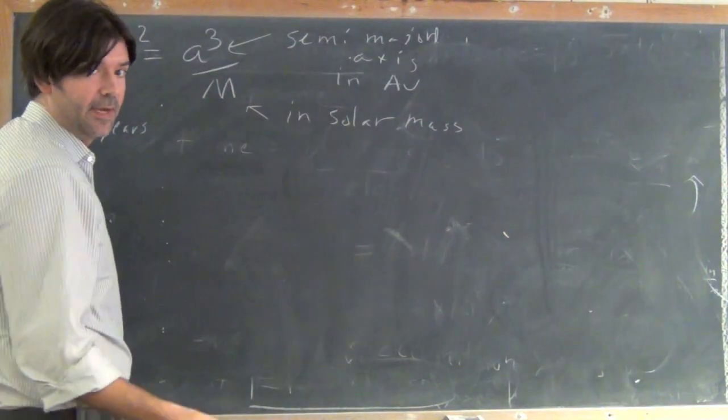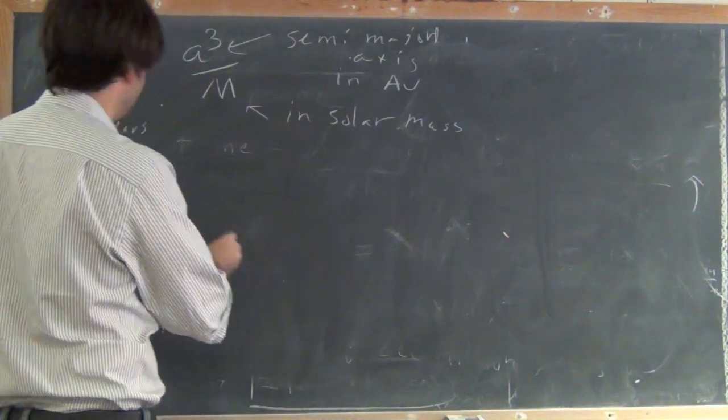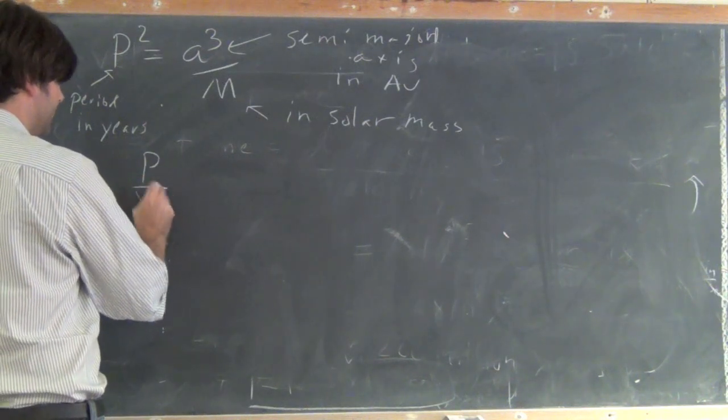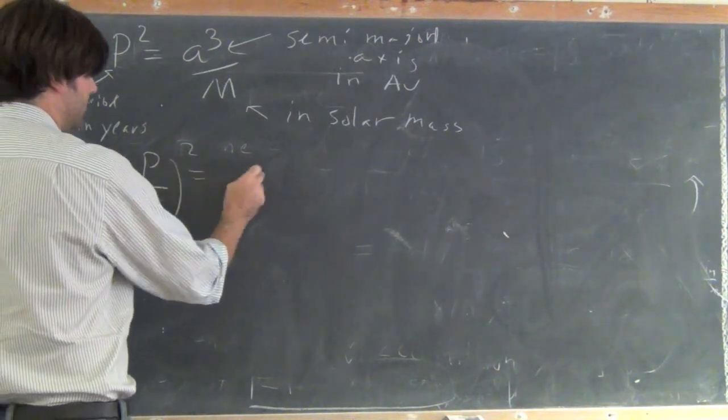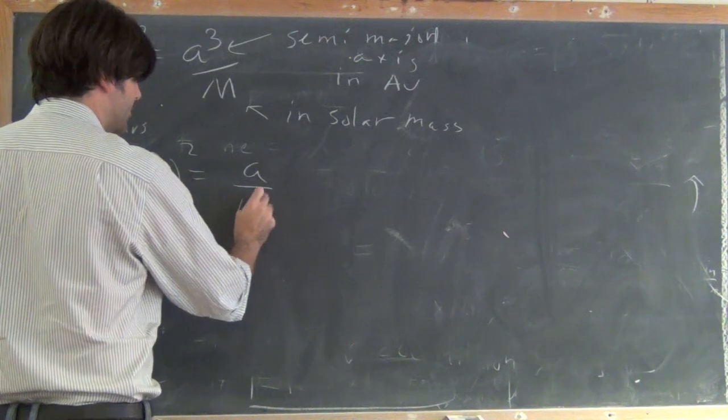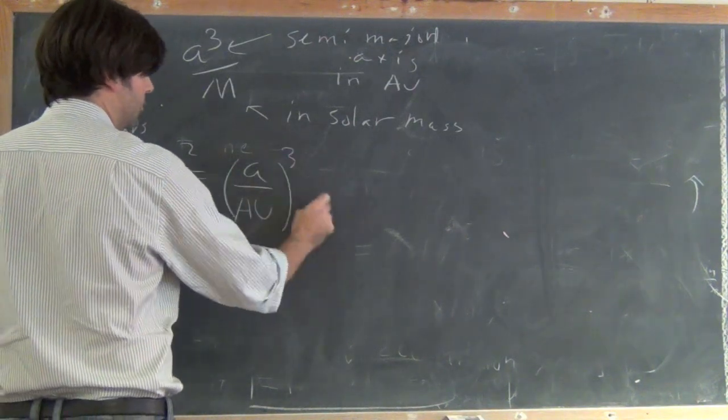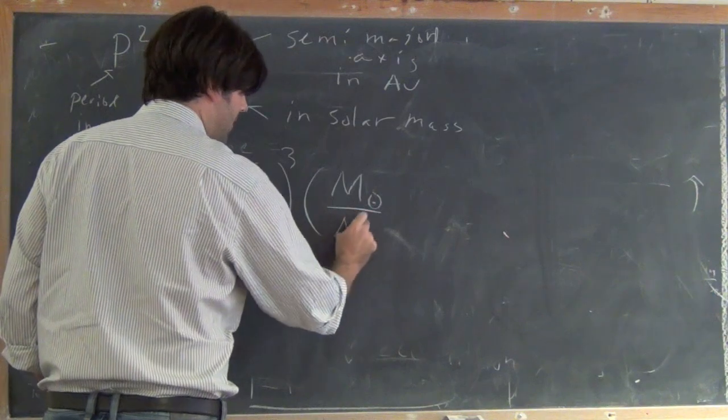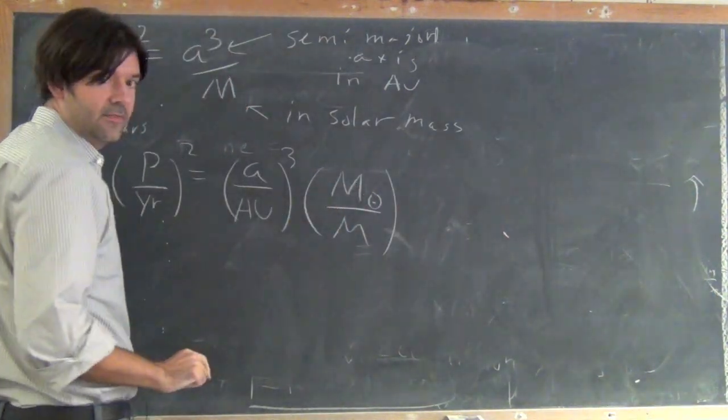Another way to write this formula that takes this all into account is p over year squared is equal to a over astronomical unit cubed times the mass in units of the solar mass.